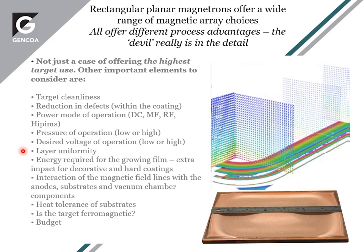Layer uniformity is related to the distribution of the magnetic field on the magnetron and also that the erosion is uniform and the target length is appropriate. Energy required for the growing film is another consideration — magnetrons can add extra energy to decorative and hard coating processes, and I'll show the way that is done by unbalancing sources. Interaction with magnetic field lines with anodes, substrates, and other vacuum components is also very important to complete a system design.